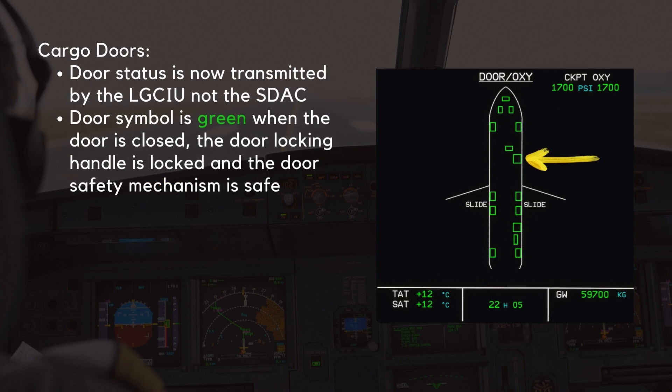For the cargo doors, similar principles to the cabin doors apply, except the door status is now transmitted by the landing gear control and interface unit — the LG-CIU — not by the S-Stack.